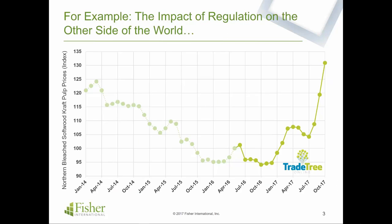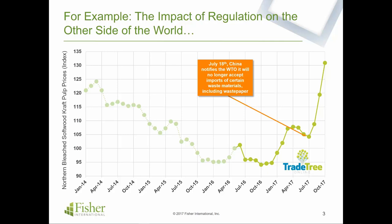Let's talk about the impact of regulation on the other side of the world here in North America. The chart in front of us is from TradeTree — northern bleached softwood kraft pulp prices, indexed to 100, from actual invoices. You can see most recently there's a turning point in global pulp prices, coinciding with regulations in China. In July, China announced it would no longer accept certain waste papers, and as a consequence pulp prices shot straight up — in fact, a 30% gain.